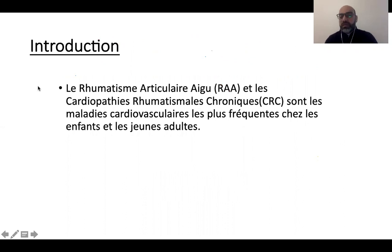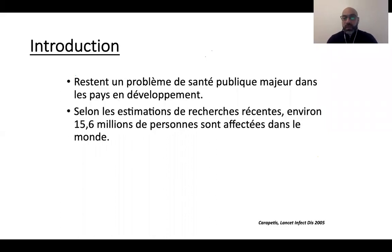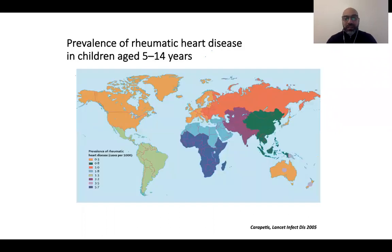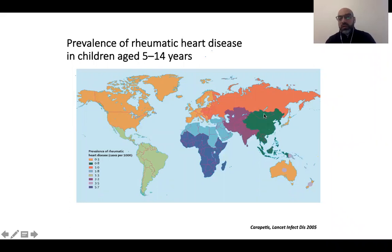Le rhumatisme articulaire aigu est la cardiopathie rhumatismale chronique la plus fréquente chez l'enfant et le sujet jeune. Il reste un problème de santé publique majeur dans le monde, touchant près de 16 millions de personnes selon une publication récente. En Algérie, représentée en bleu ciel sur la cartographie, on a entre 1 et 8 cas pour 100 000 enfants ; aux États-Unis et en Europe, c'est 0 à 3 cas. La prévalence chez nous est en nette diminution et c'est devenu une maladie rare.